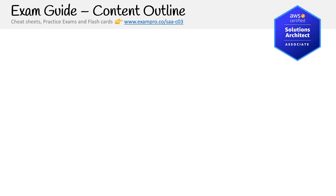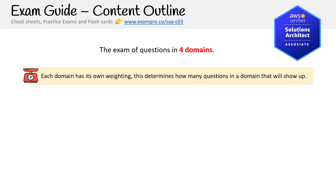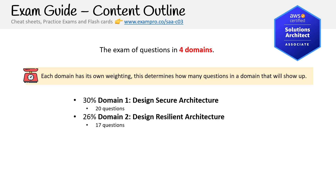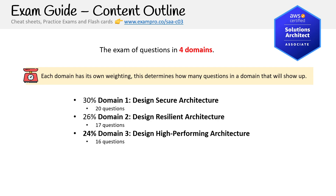Let's talk about the content outline — we'll open up the exam guide PDF and take a closer look after this video. The exam questions are broken into four domains, each with its own weighting that determines how many questions from that domain will appear. Domain one is Design Secure Architecture, domain two is Design Resilient Architecture, domain three is Design High Performing Architecture, and domain four is Cost Optimized Architectures.